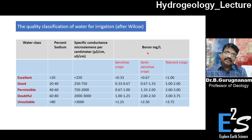The corresponding value for semi-sensitive is given here: 0.67 to 1.33 is good, 1.33 to 2 is permissible, 2 to 2.50 is doubtful, and more than 2.50 is unsuitable.